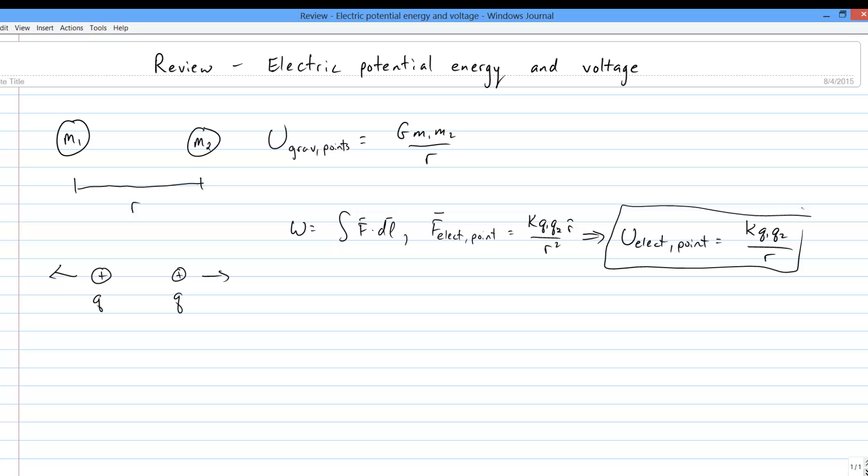Potential energy U is KQ1Q2 over R, where R is the distance between the two charges. Note that potential energy is a scalar and that no vectors appear in this equation.